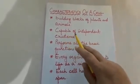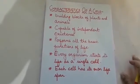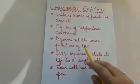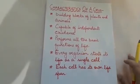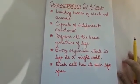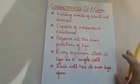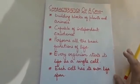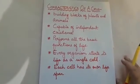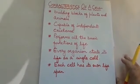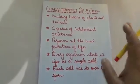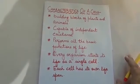The second characteristic is it is capable of independent existence. It means if all the essential requirements are provided to a single cell, it may stay alive. The third characteristic is it performs all the basic functions of life, such as excretion, nutrition, and transportation of materials from one part of the cell to another. The fourth characteristic is every organism starts its life as a single cell, whether it is a unicellular or multicellular organism, whether it reproduces asexually or sexually.